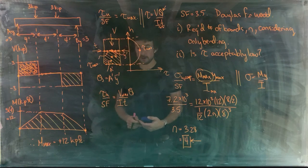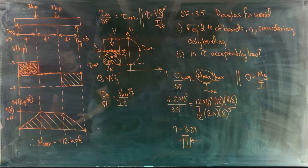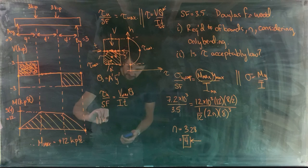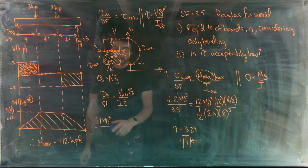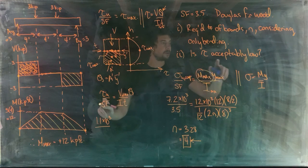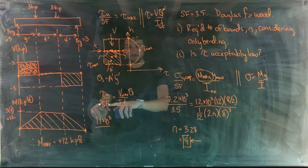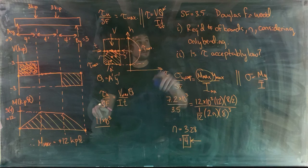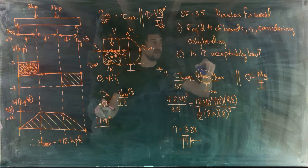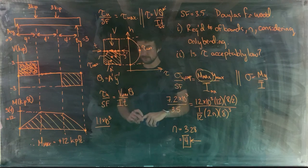The ultimate shear strength for Douglas fir is 1.1 ksi = 1.1 × 10³ PSI. In this case, the safety factor is what we're solving for — if it comes out above 3.5, the shear stress is acceptably low; if below 3.5, it's not acceptable.